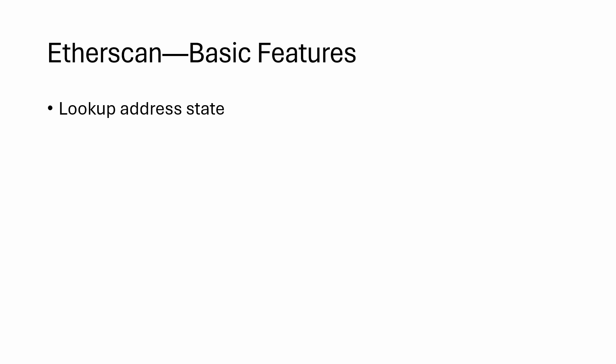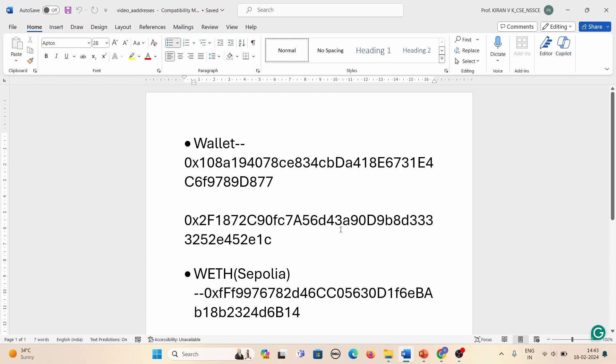Using Etherscan, we can look up what's at an address — maybe the balance and nonce information and other details. We can even use transaction hashes to check the details of a transaction, and we can see the expenses incurred for each transaction — that's the gas data. We won't be covering gas in this video; we'll just see what's possible if we have an address and if we have a transaction hash. Let's see a demo of looking up address state.